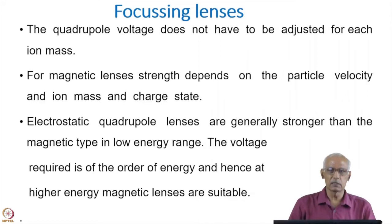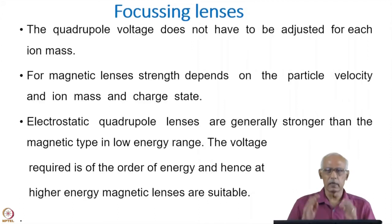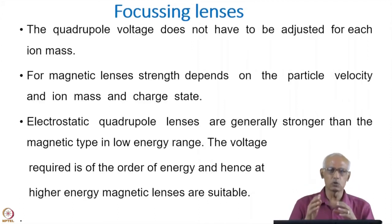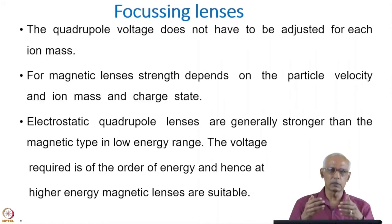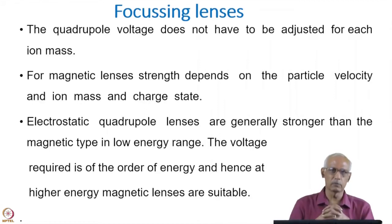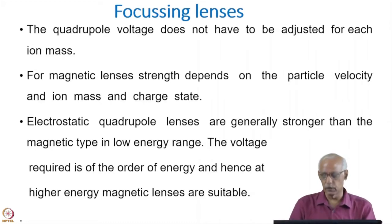At high energies, electrostatic quadrupoles cannot be used because the voltage required to focus these beams has to be of the order of the beam energy. For example, if you want to focus a 50 keV beam, the electrode will require voltage of the order of keV. Therefore, at high energies, magnetic quadrupoles are preferred, despite the limitation of being mass-dependent. The current which has to pass to generate the magnetic field has to keep varying with the mass and velocity.